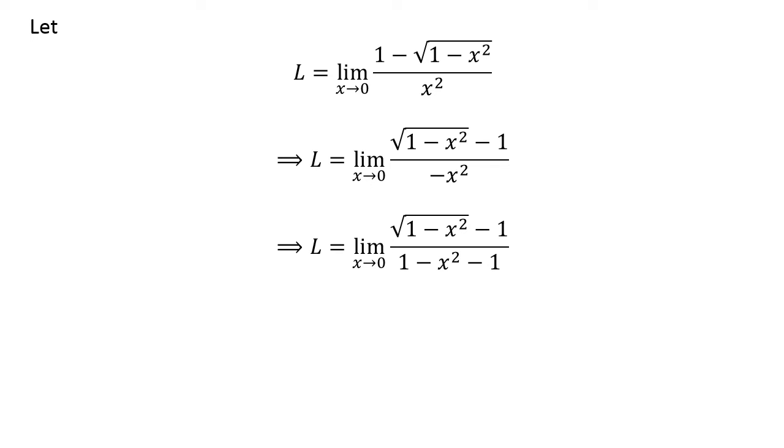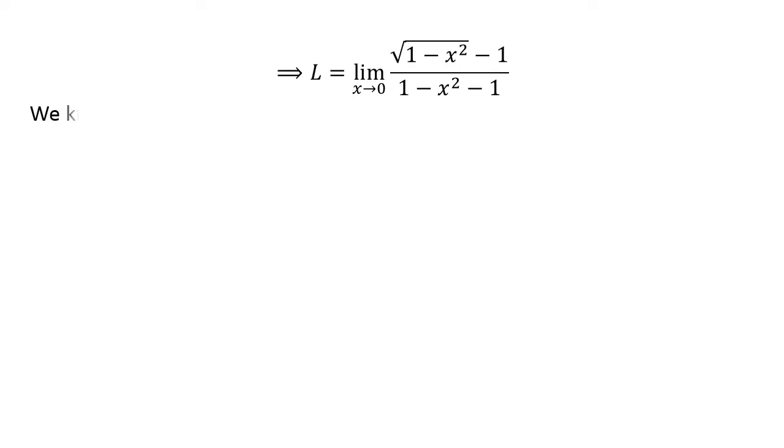Let us add and subtract 1 in the denominator. We know a minus b equals square of square root of a minus square of square root of b, which can be factorized as square root of a minus square root of b times square root of a plus square root of b.